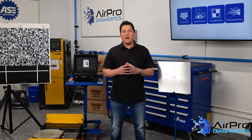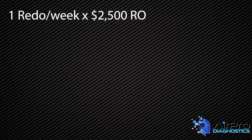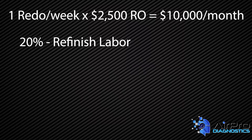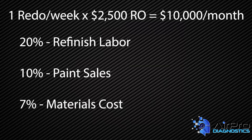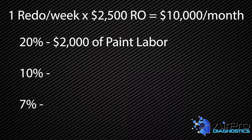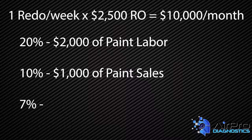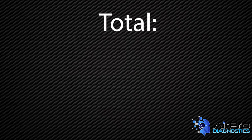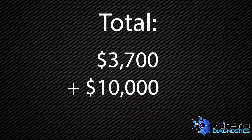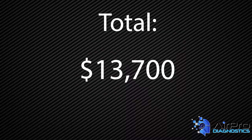Possibly impacting the entire shop. One redo a week multiplied by a $2,500 average RO equals $10,000 a month. From that number, we'll take 20% refinish labor and 10% paint sales and add to that 7% materials cost. These percentages are derived from the baseline number and look like this: $2,000 of paint labor, $1,000 of paint sales, $700 of material — for a total of $3,700 — plus the lost revenue opportunity of the $10,000 worth of ROs that didn't get painted, resulting in $13,700 in a month.